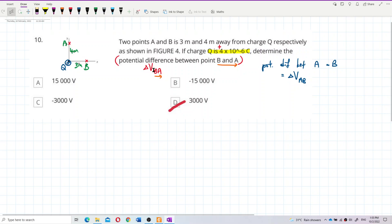Delta V_BA is actually V_B minus V_A. If between A and B, delta V_AB, then it is V_A minus V_B.